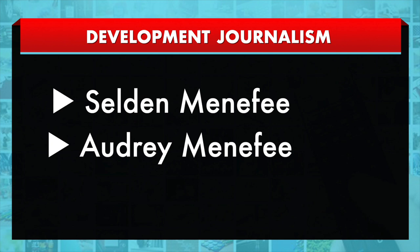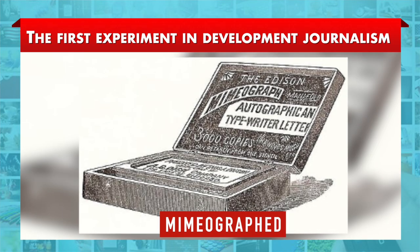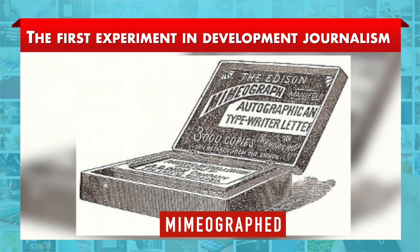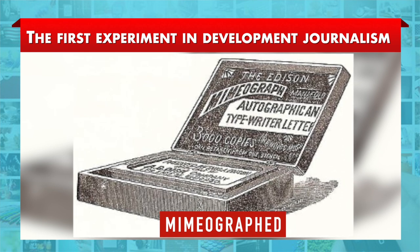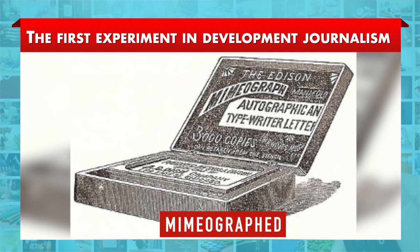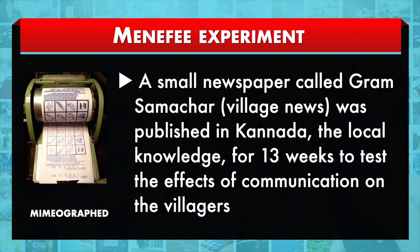It was an interesting study of a mimeographed newspaper in Mysore containing some developmental information. Known as the Manifee Experiment, a small newspaper called Gram Samachar was published in Kannada, the local language, for 13 weeks to test the effects of communication on the villagers. For this purpose, four villages were selected near Mysore in Karnataka.